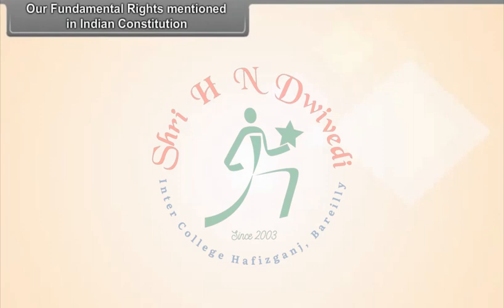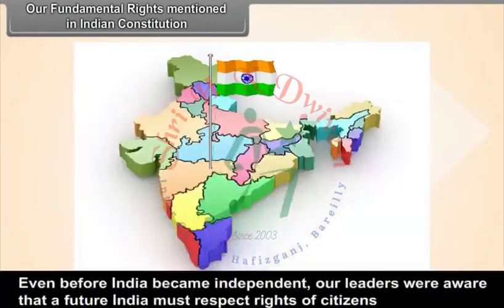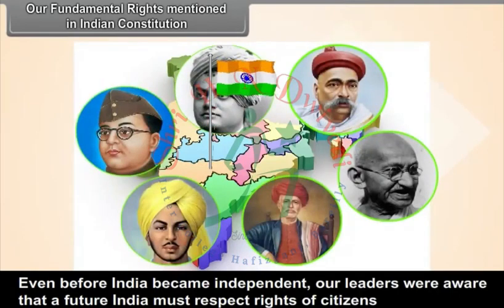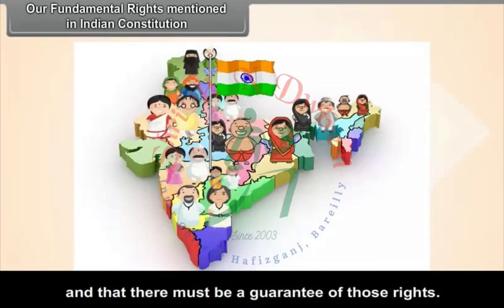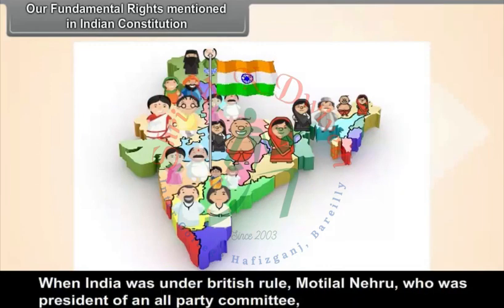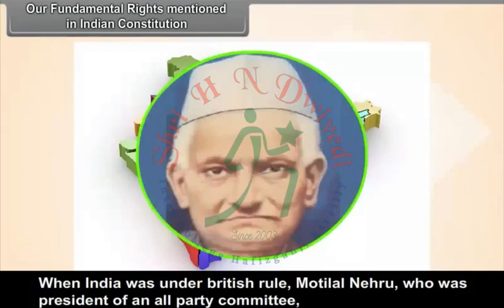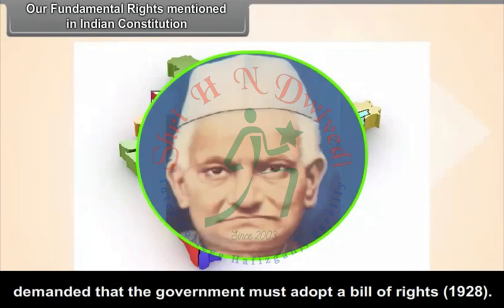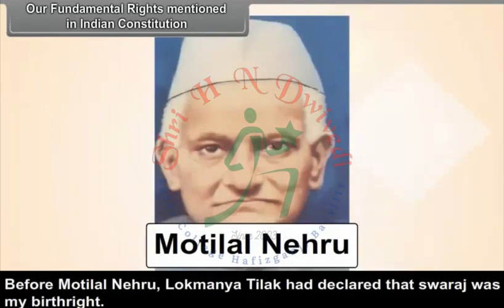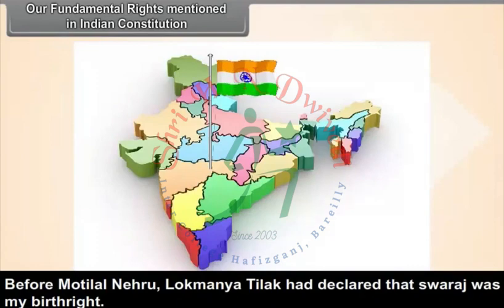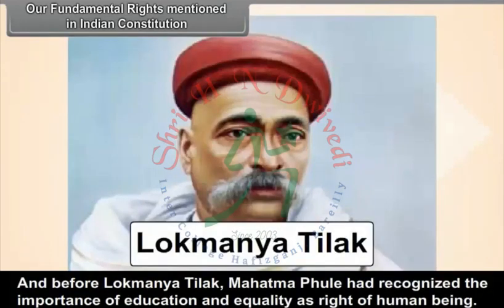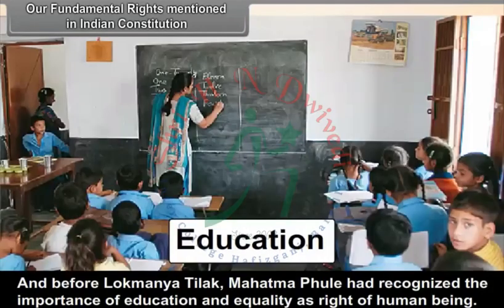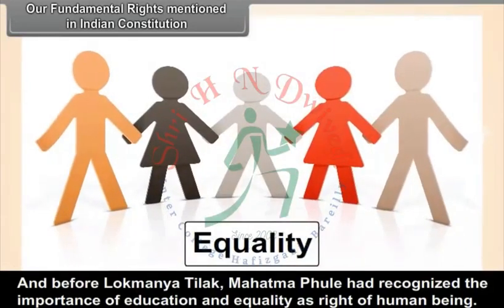Our fundamental rights mentioned in the Indian Constitution. Even before India became independent, our leaders were aware that a future India must respect the rights of citizens. When India was under British rule, Motilal Nehru, president of an all-party committee, demanded that the government must adopt a Bill of Rights in 1928. Before Motilal Nehru, Lokmanya Tilak had declared that Swaraj was his birthright. And before Tilak, Mahatma Phule had recognized the importance of education and equality as rights of human beings.